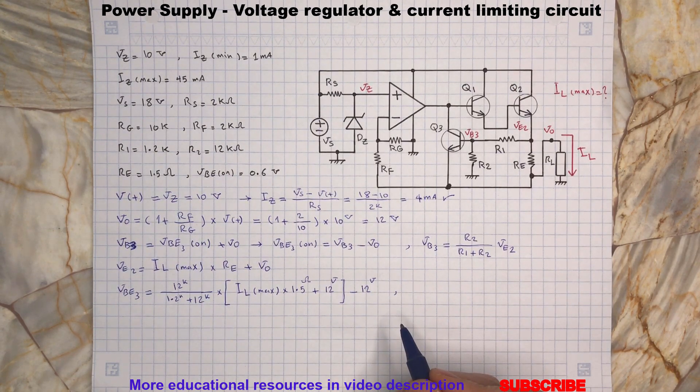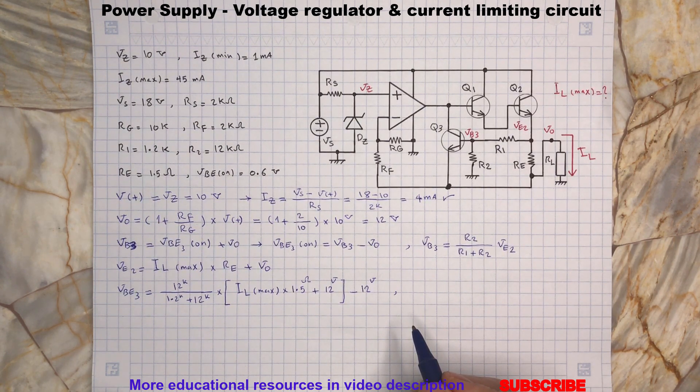The transistor Q3 will turn on when its base emitter voltage increases to 0.6V. Now by plugging the base emitter voltage equals to 0.6V and solving this equation for ILmax we get the maximum output current as the following.